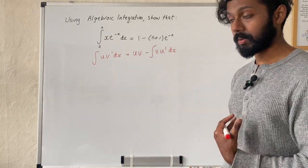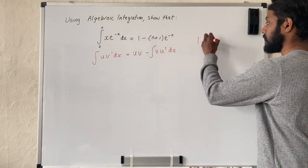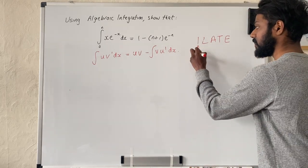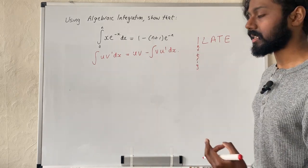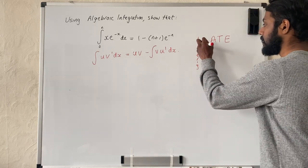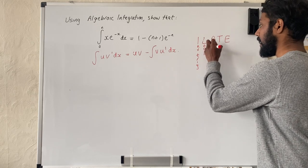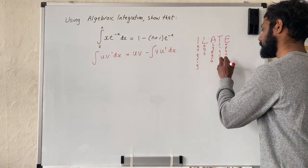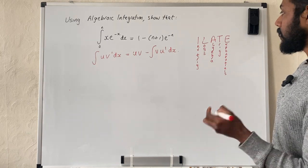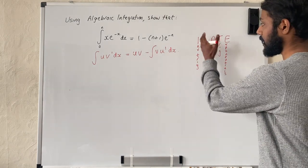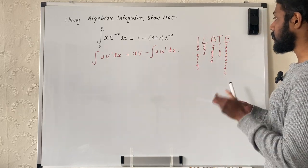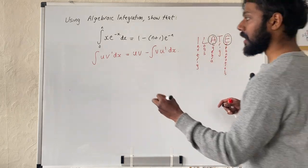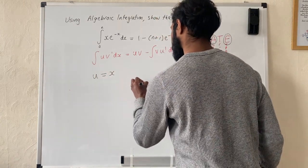I've got an old-school technique called ILATE. We don't actually need the I anymore unless you're a further mathematician. ILATE stands for: Inverse trig — which is not in the A-level maths spec anymore in the sense that we don't integrate arc sine, arc cosine, arc tan; Logs; Algebra; Trig; and Exponentials. Whichever function comes first in ILATE from left to right is going to be your u. In this question I've got algebra — x — and exponential. Since algebra comes before exponential, my u is going to be x and my v-prime is going to be e to the minus x.